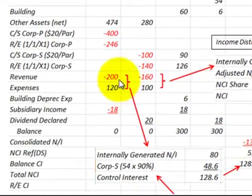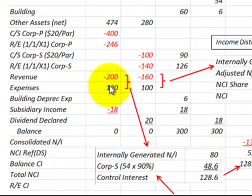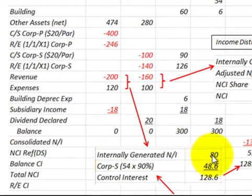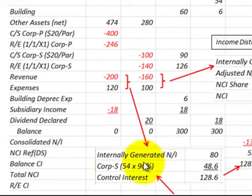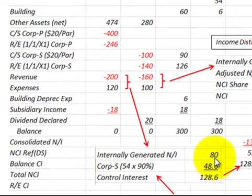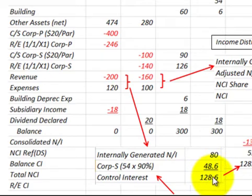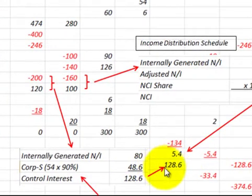For the parent's income: revenues were $200,000 and expenses $120,000, so internally generated income is $80,000. The parent also receives 90% of the subsidiary's adjusted net income — 90% of $54,000 equals $48,600. The total controlling interest share is $80,000 plus $48,600, or $128,600, which is recorded on the consolidated income statement for the controlling interest.